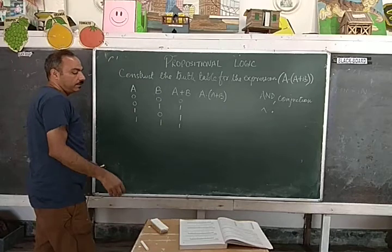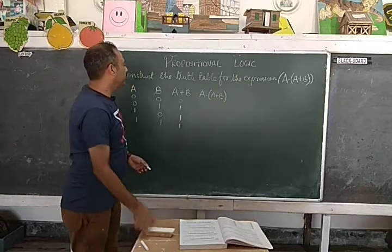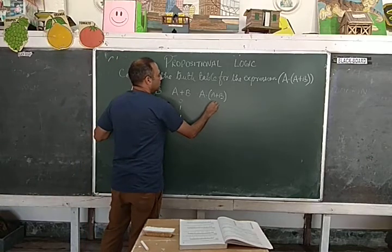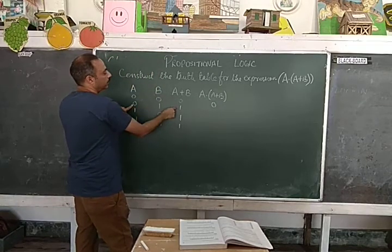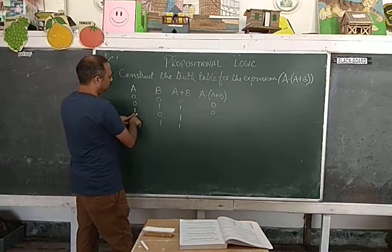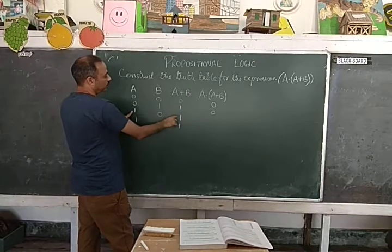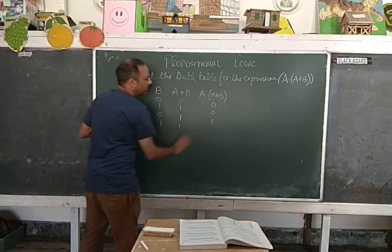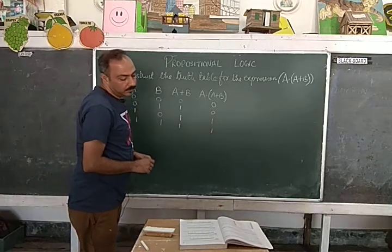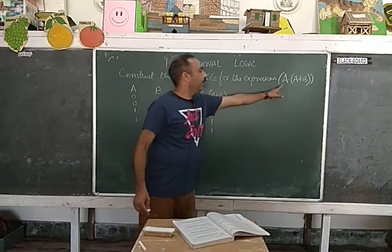What is the truth theorem of AND? What are the conditions for a true statement? Both are false, so it is false. Here one is true and one is false, so it is false. Here both conditions are true — then both the conditions are satisfied. Both the conditions are true, that means the condition is satisfied. So this is the truth table of expression A and A plus B.